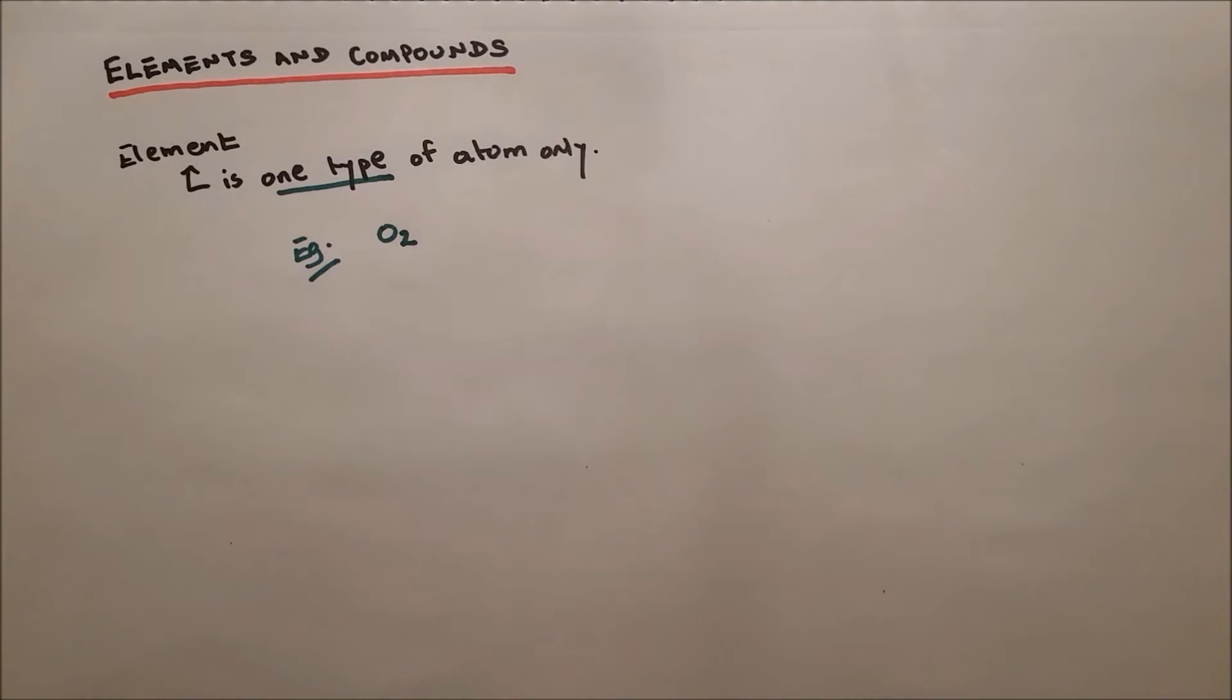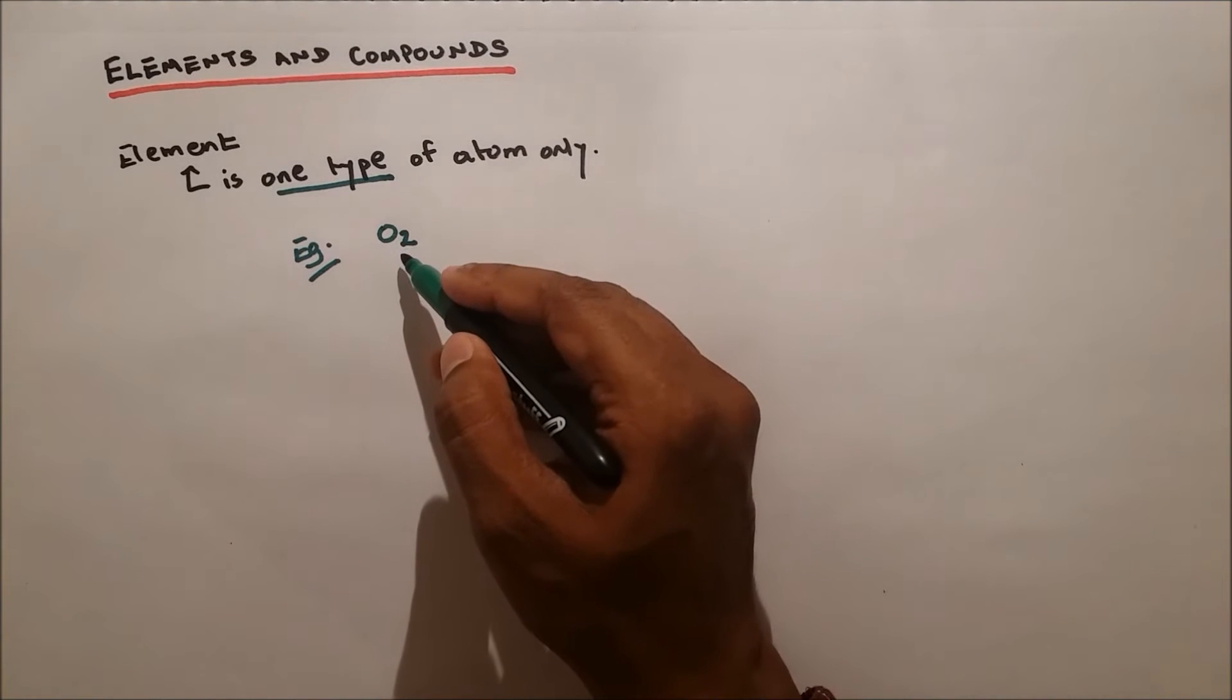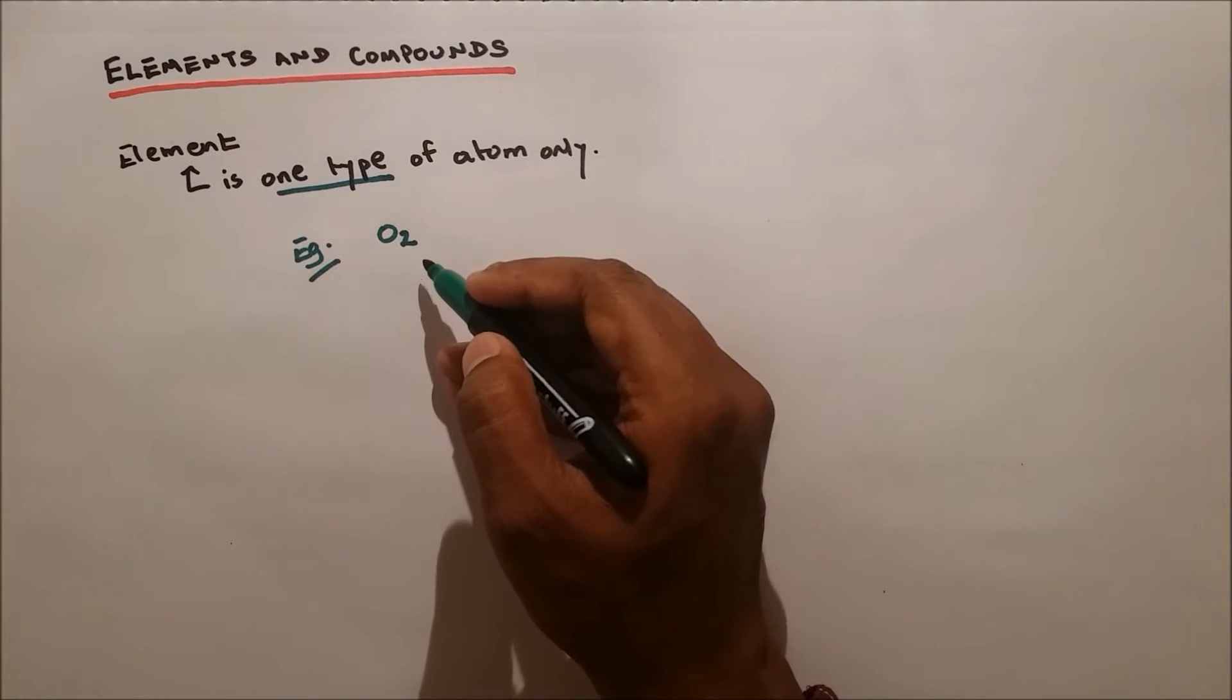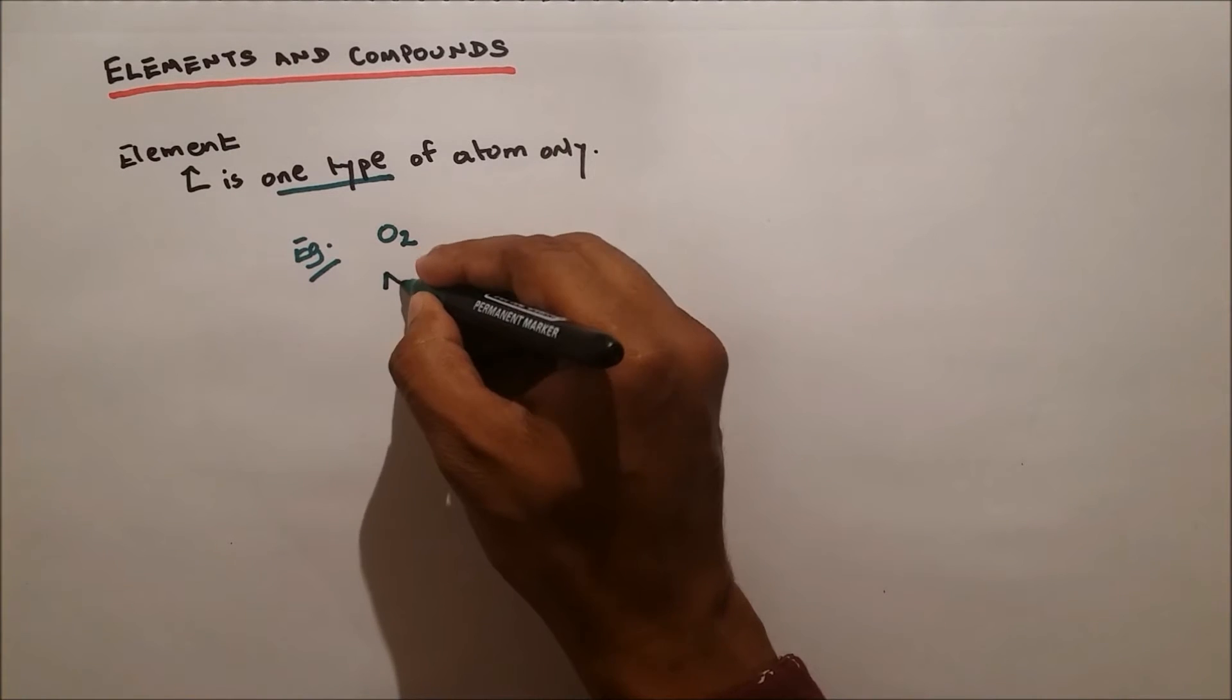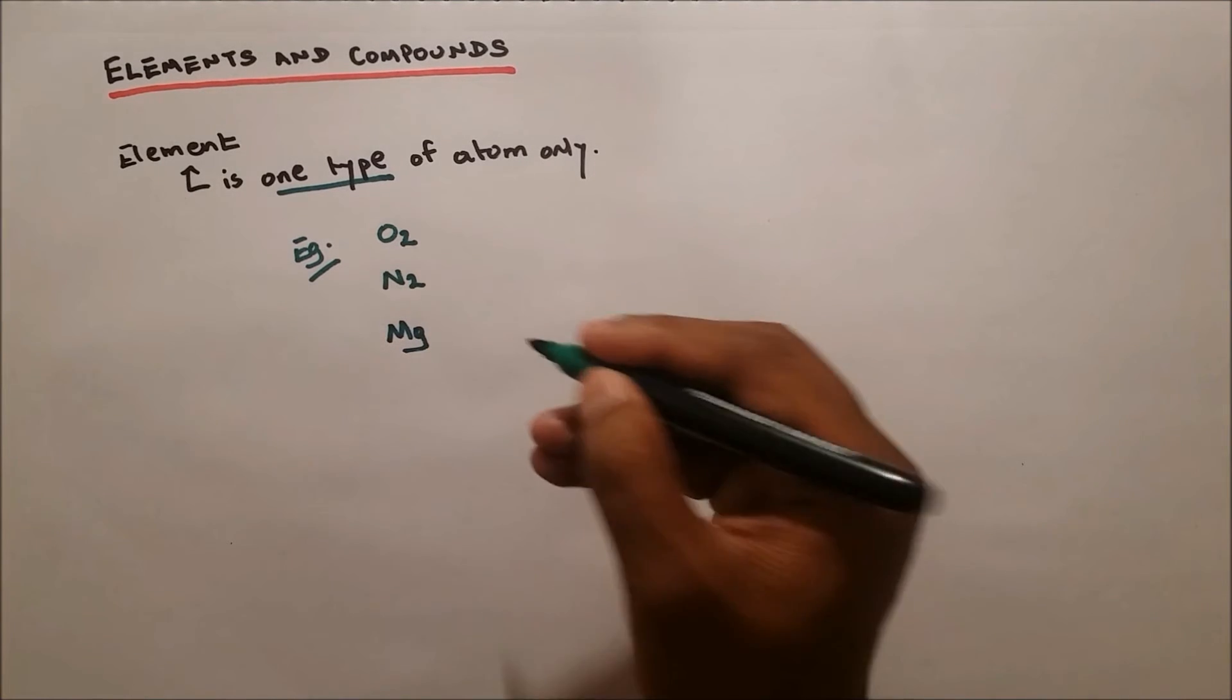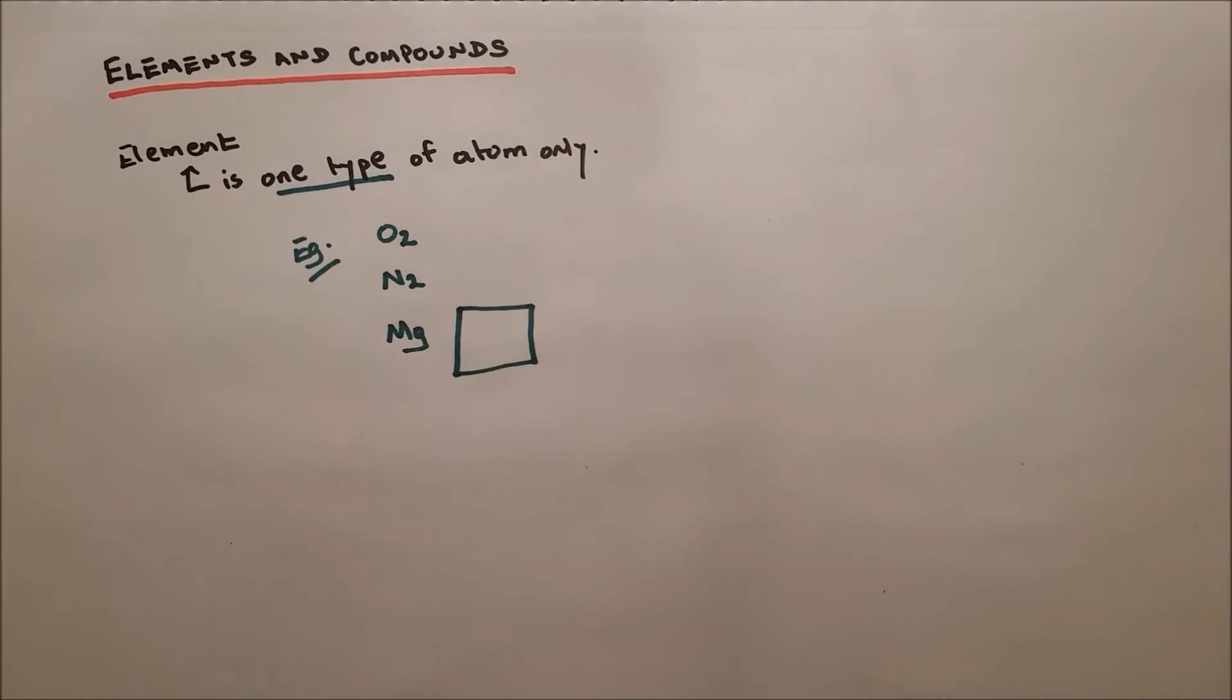Oxygen is an element. The reason is because there's two atoms of oxygen, but they belong to only one type of atom which is oxygen. Nitrogen is the same thing.